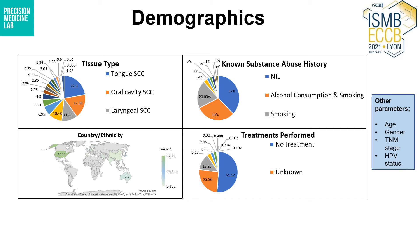Starting with the demographics, we collected data on tissue type, country or ethnicity, substance abuse history, treatments performed, and other parameters such as age, gender, TNM stage, and HPV status.